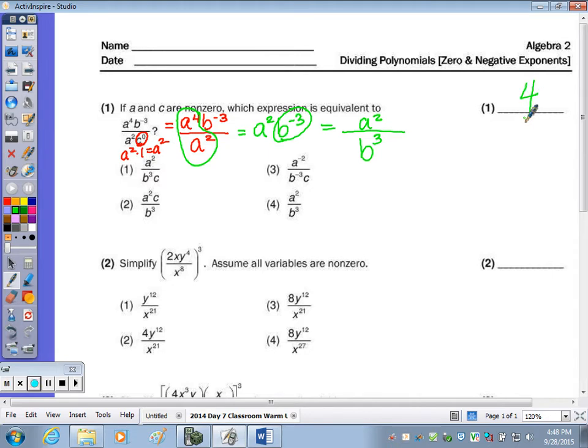And number two, I have to cube this fraction. You could do some reducing beforehand, but I'm going to go ahead and cube everything. So two cubed is eight. X to the first cubed is x cubed. Y to the fourth cubed is y to the twelfth. When it's power to power, I multiply exponents.